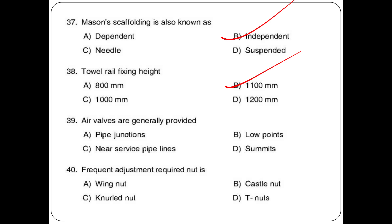Air valves are generally provided near — options: pipe junctions, low points, near service pipeline. Air valves are provided near high points. Frequent adjustment required nut — options: wing nut, castle nut, knurled nut, T nut. The answer is option C: knurled nut.